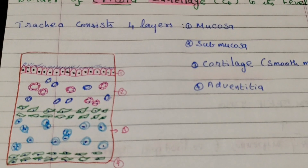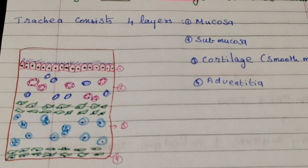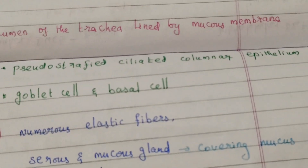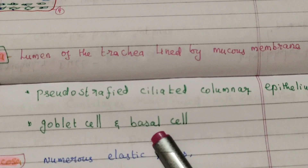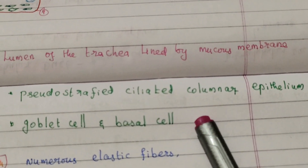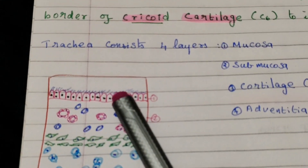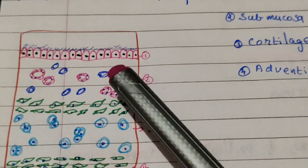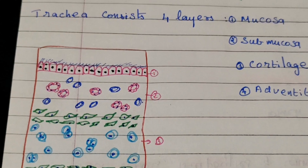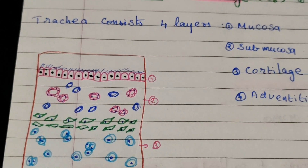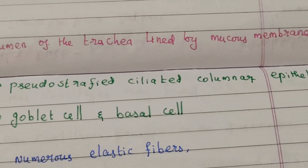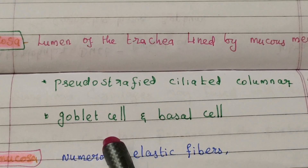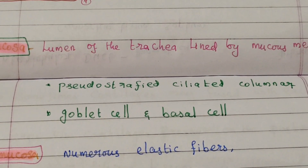The lumen of the trachea is lined by a mucous membrane. This consists of a lining epithelium that is pseudostratified ciliated columnar epithelium. It contains numerous goblet cells, and basal cells are also present, lining next to the basement membrane.